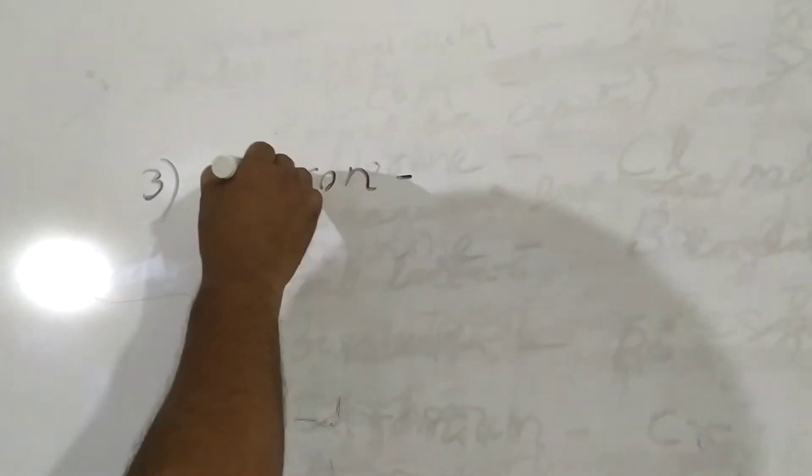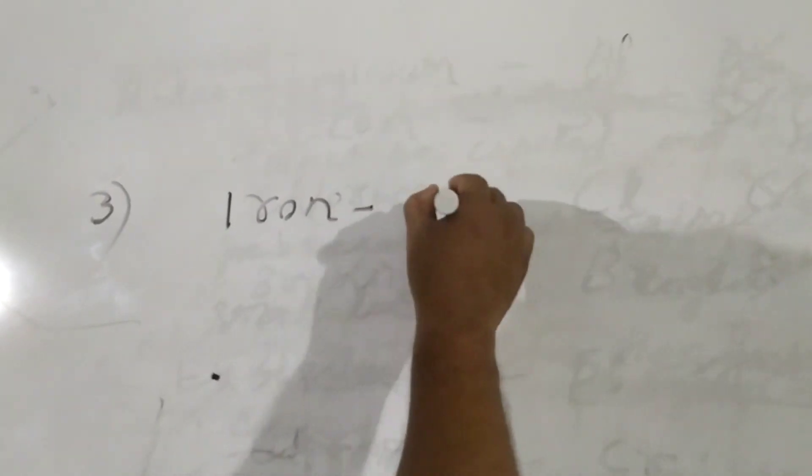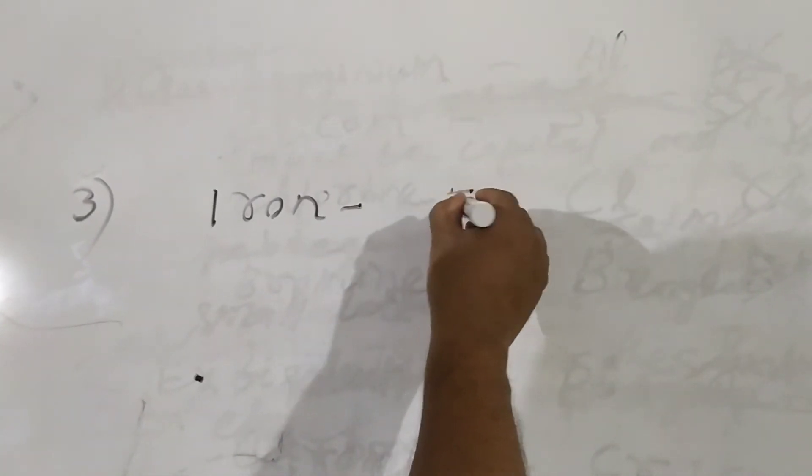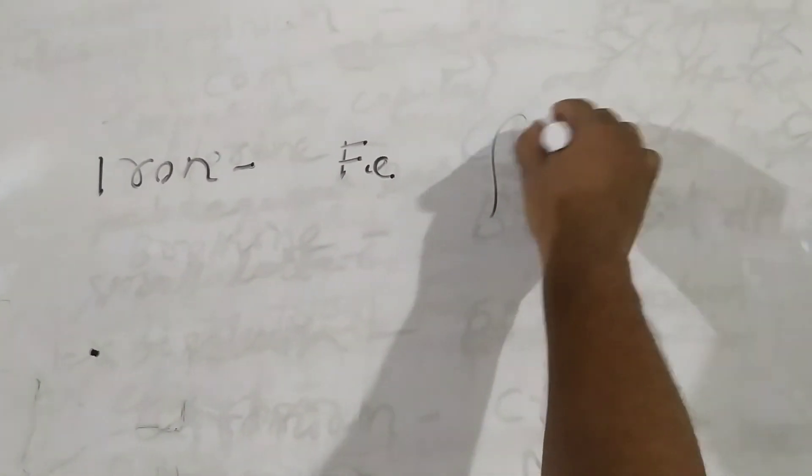For example, Iron. Iron is derived from its Latin name and symbol is Ferrum, Fe. It is derived from, that is Ferrum.